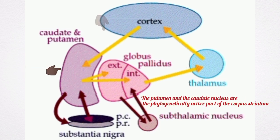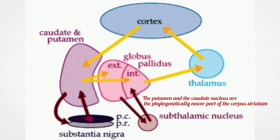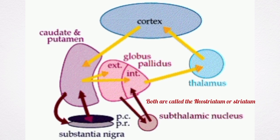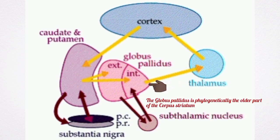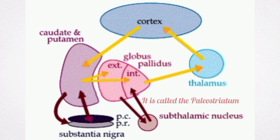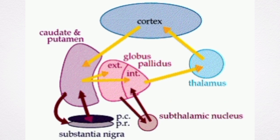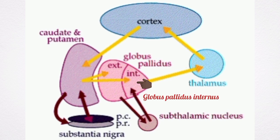The putamen and the caudate nucleus are the phylogenetically newer parts of the corpus striatum, and these two parts are together called the neostriatum, or simply the striatum. The globus pallidus is phylogenetically the older part of the corpus striatum and it is called the paleostriatum.